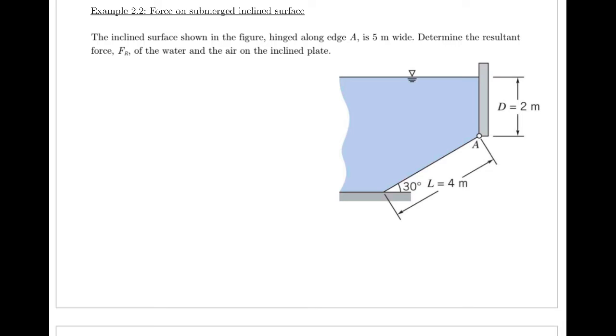Okay, so let's first solve this using the first method above. So that's also the integral method. In this question, we have an inclined surface with a fluid reservoir. There's a hinged edge at point A. It says the plate's five meters wide. And they want us to determine the resultant force, FR, of the water and the air on the incline plate.